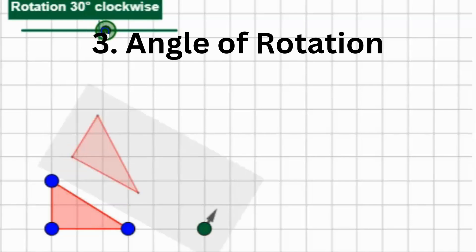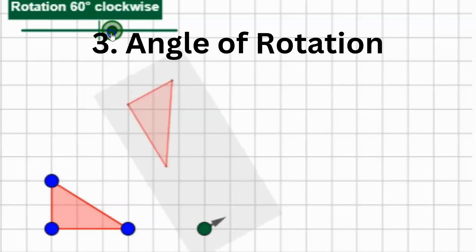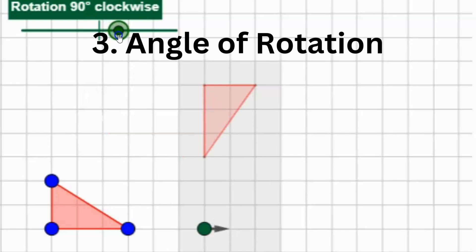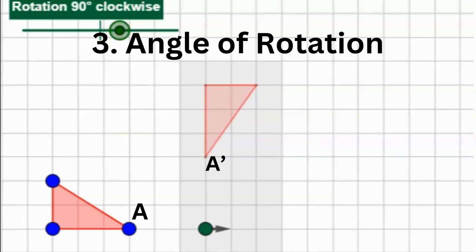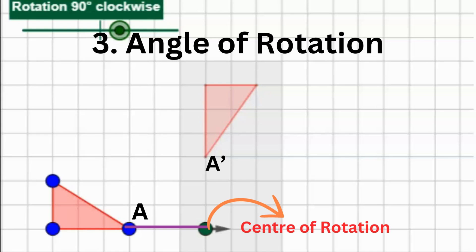3. The angle of rotation. The angle of rotation is the angle through which the object is rotated. It is the angle formed between the line that runs from the center to the object point and the line that runs from the center to the rotated or image point. The Cartesian plane is a great tool to demonstrate rotations.